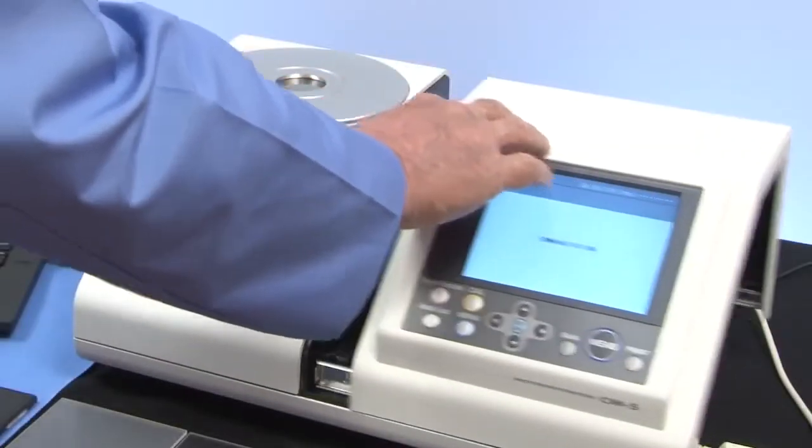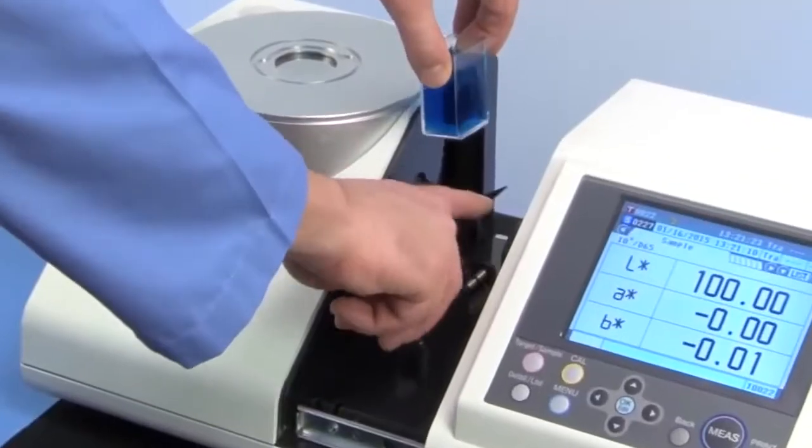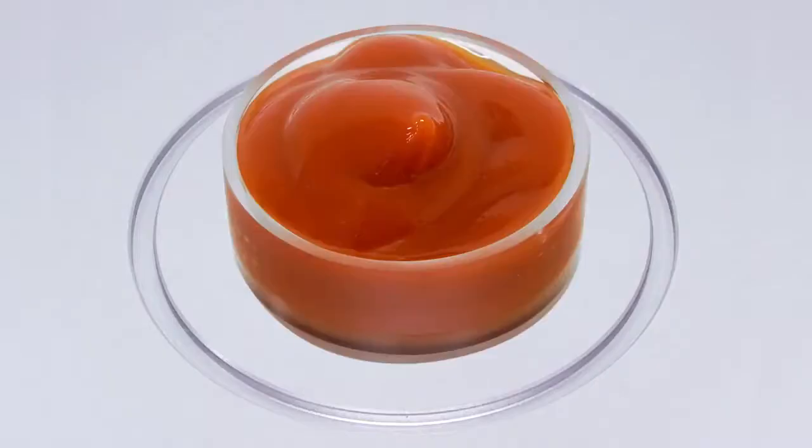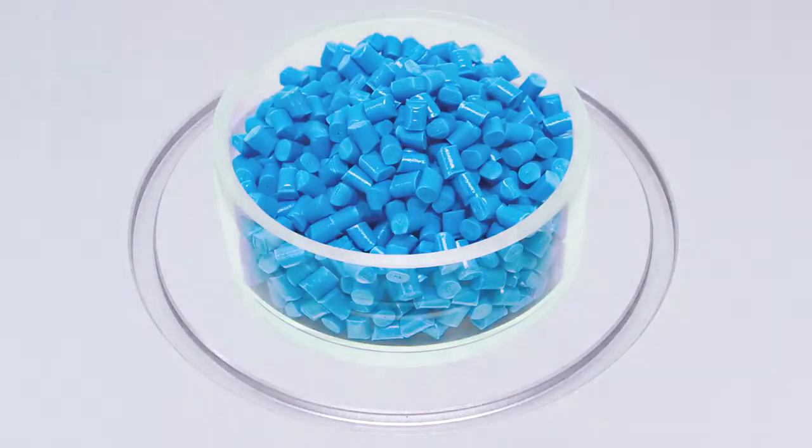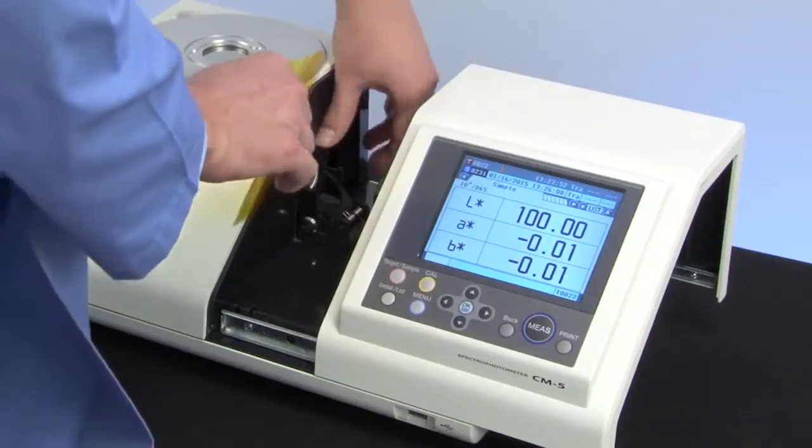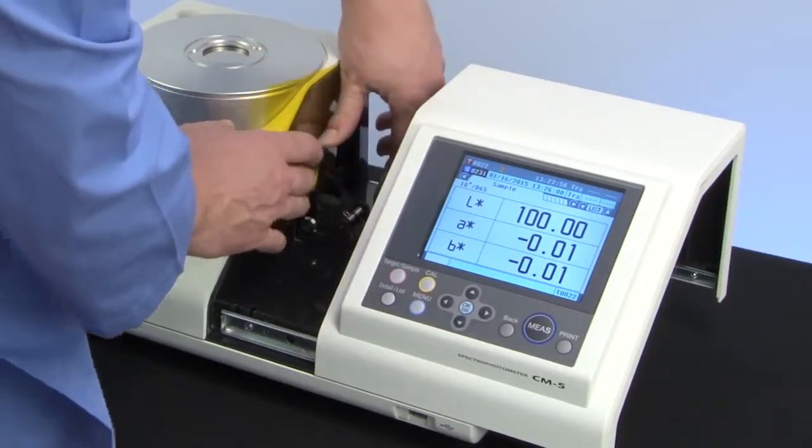The CM5 measures a variety of samples with different material characteristics such as liquids, powders, paste, and granules, as well as the haze of transparent films and glass. The transmittance chamber can hold large sheets up to 60 mm thick.